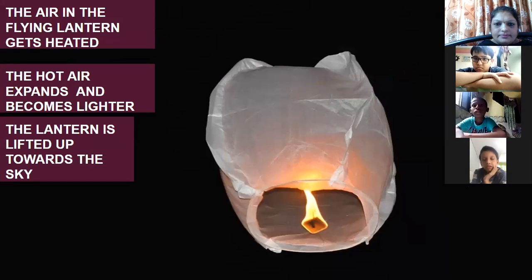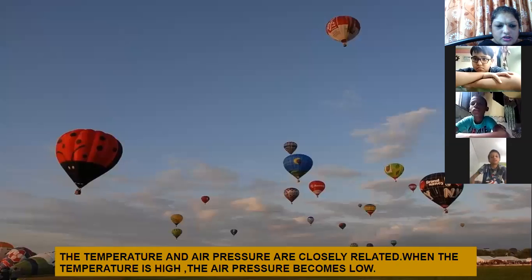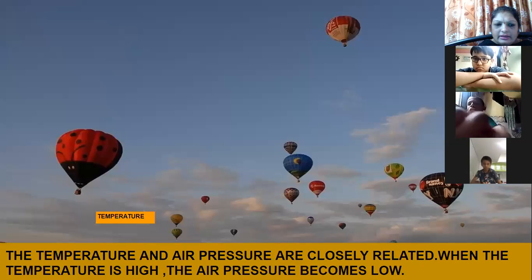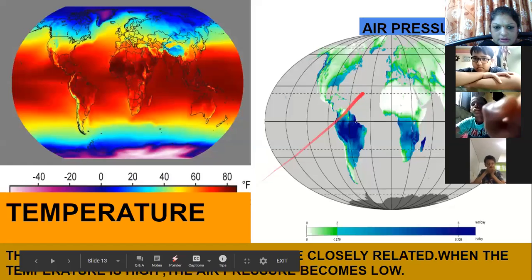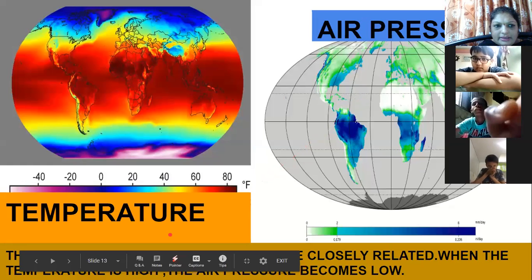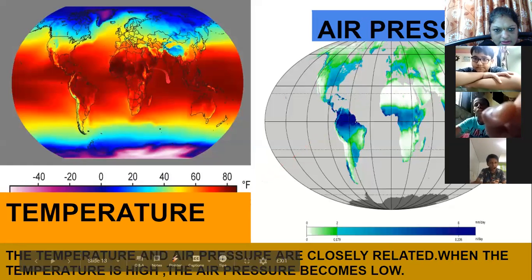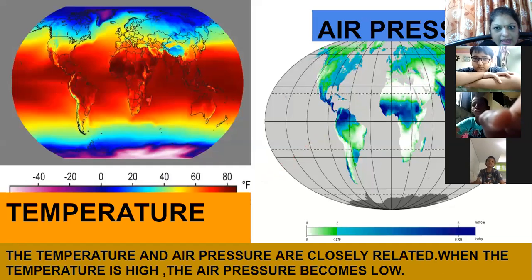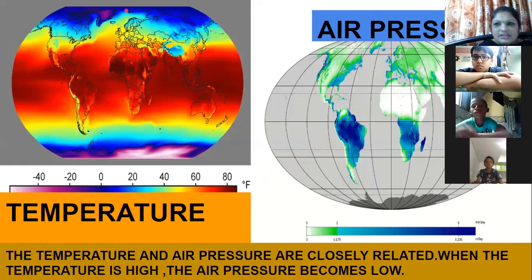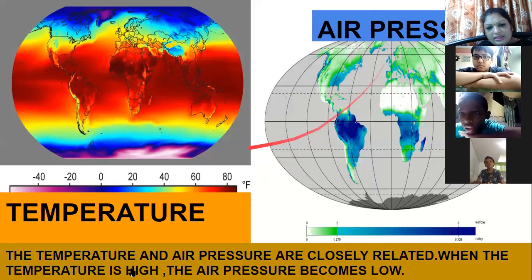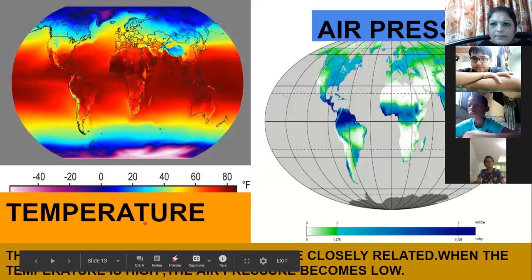We also saw how temperature and air pressure are related to each other. When the temperature is high in a region, air pressure will be low — opposite. When the temperature is low, air pressure will be high. So there is a relation between temperature and air pressure.